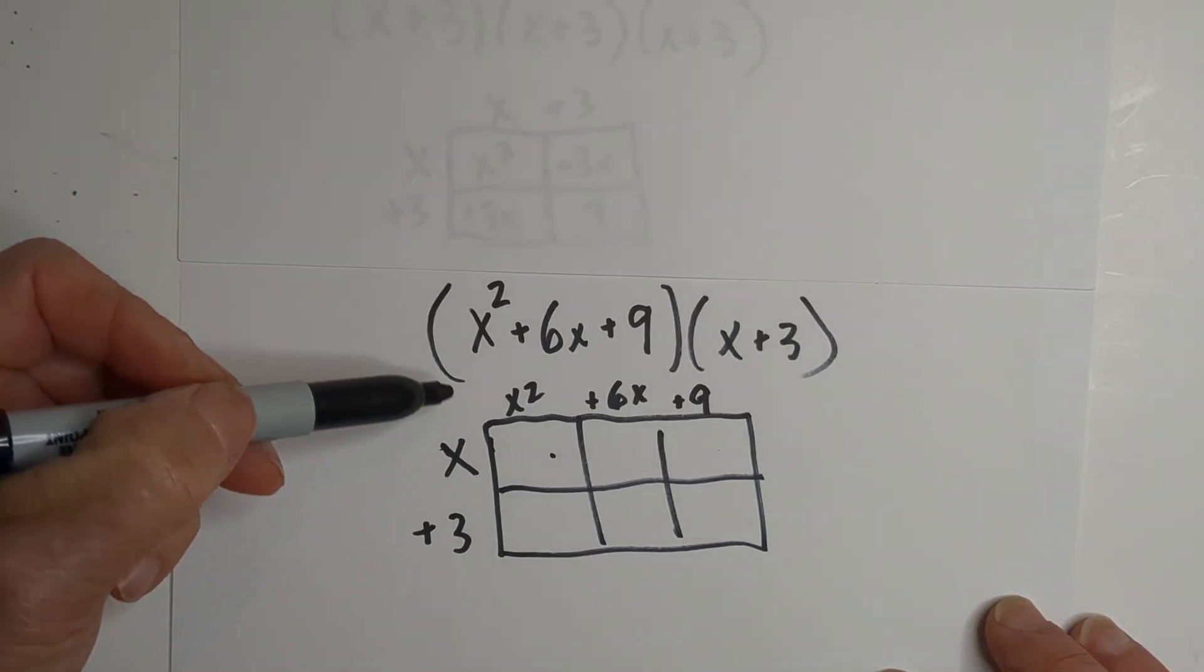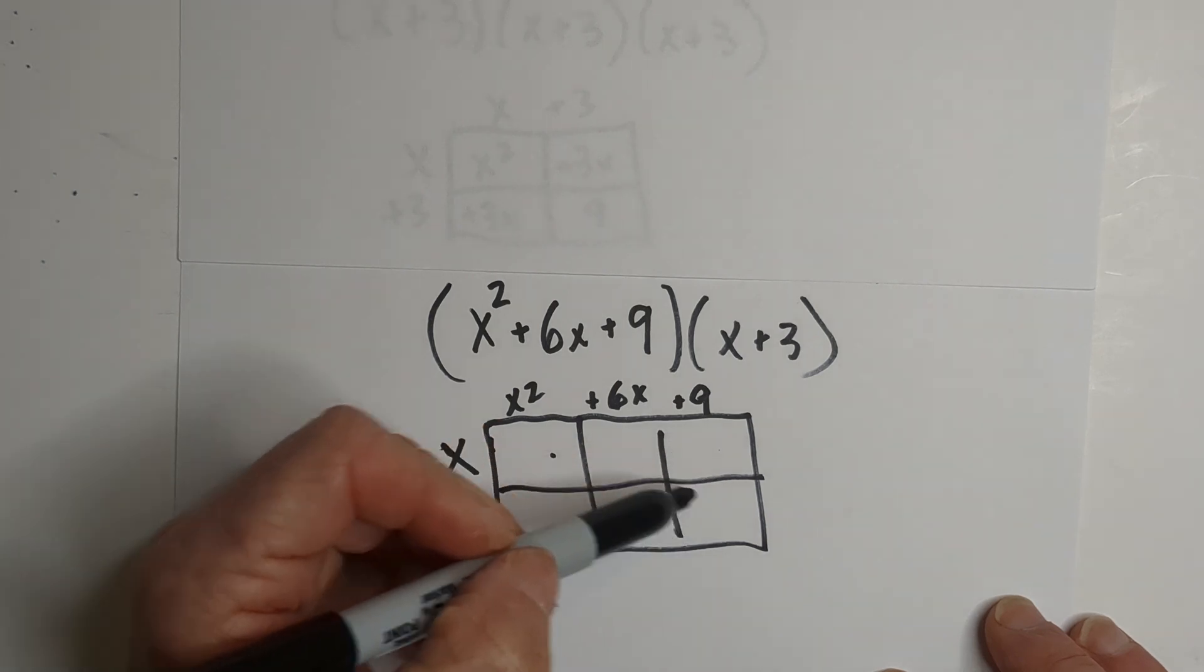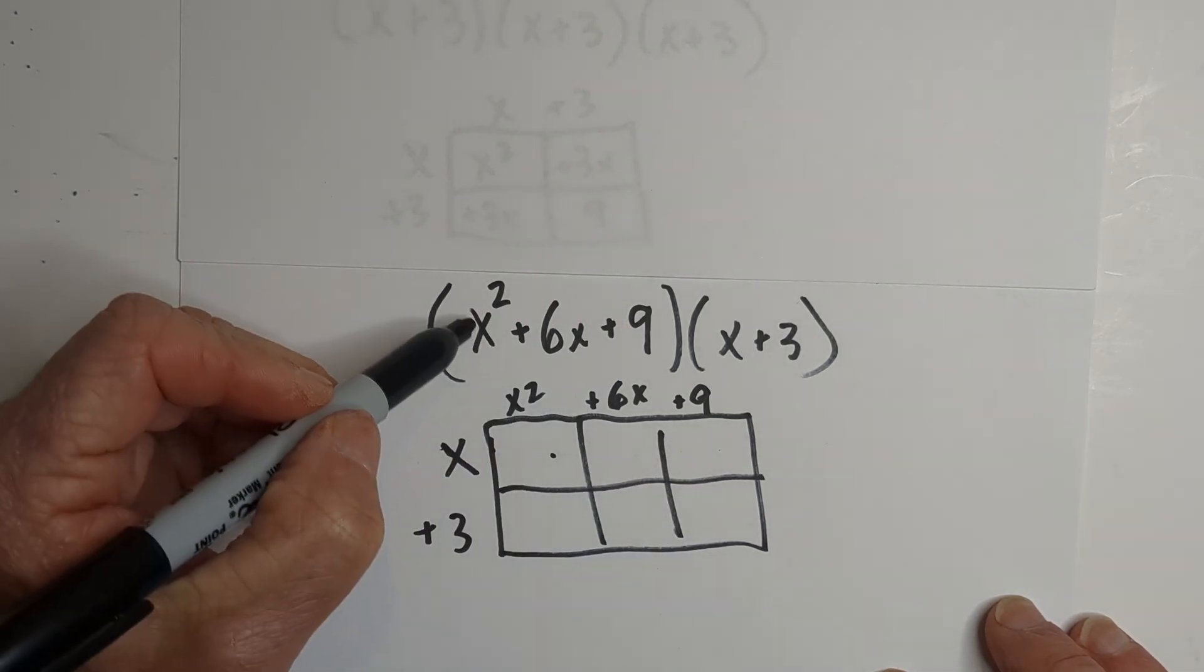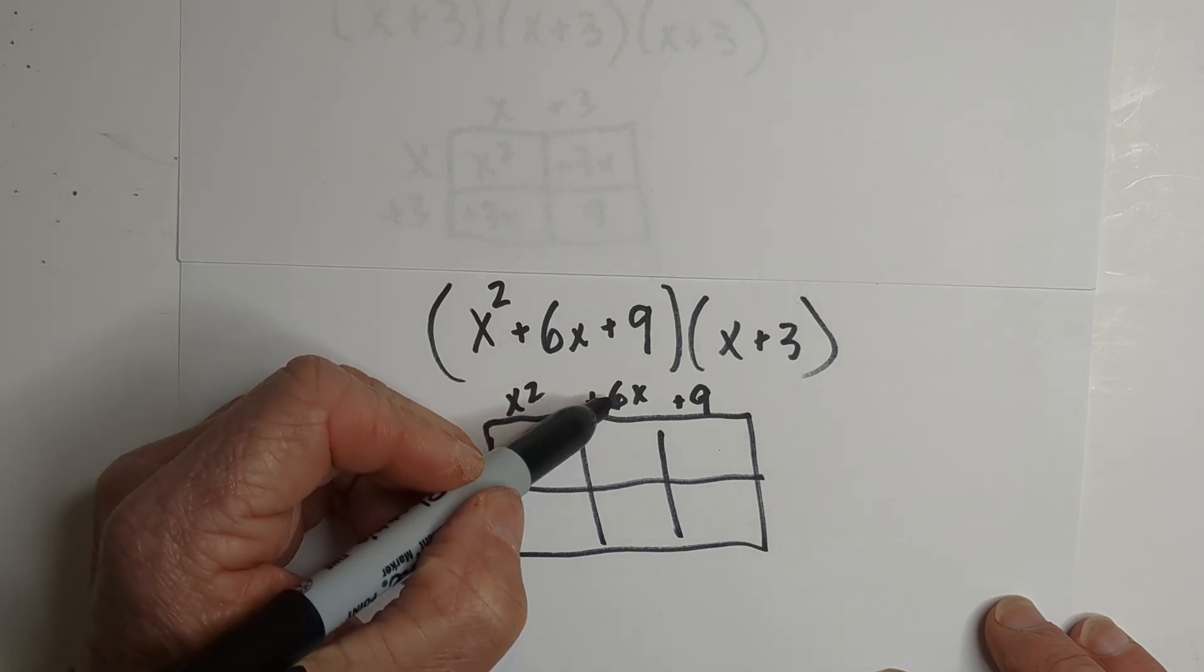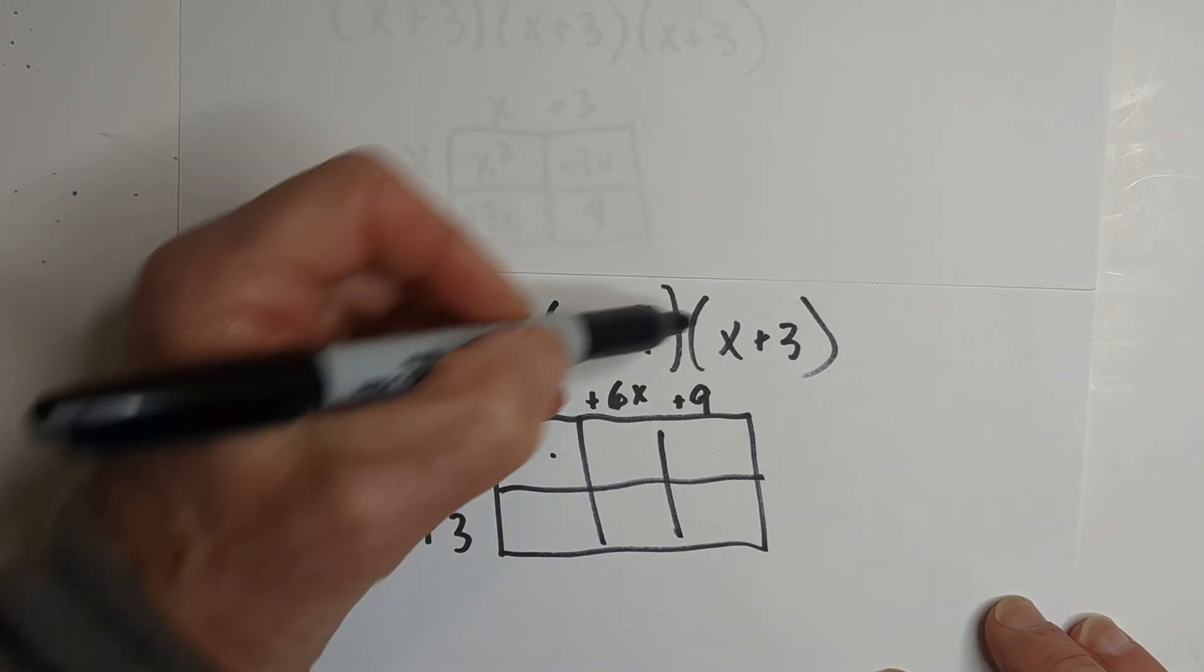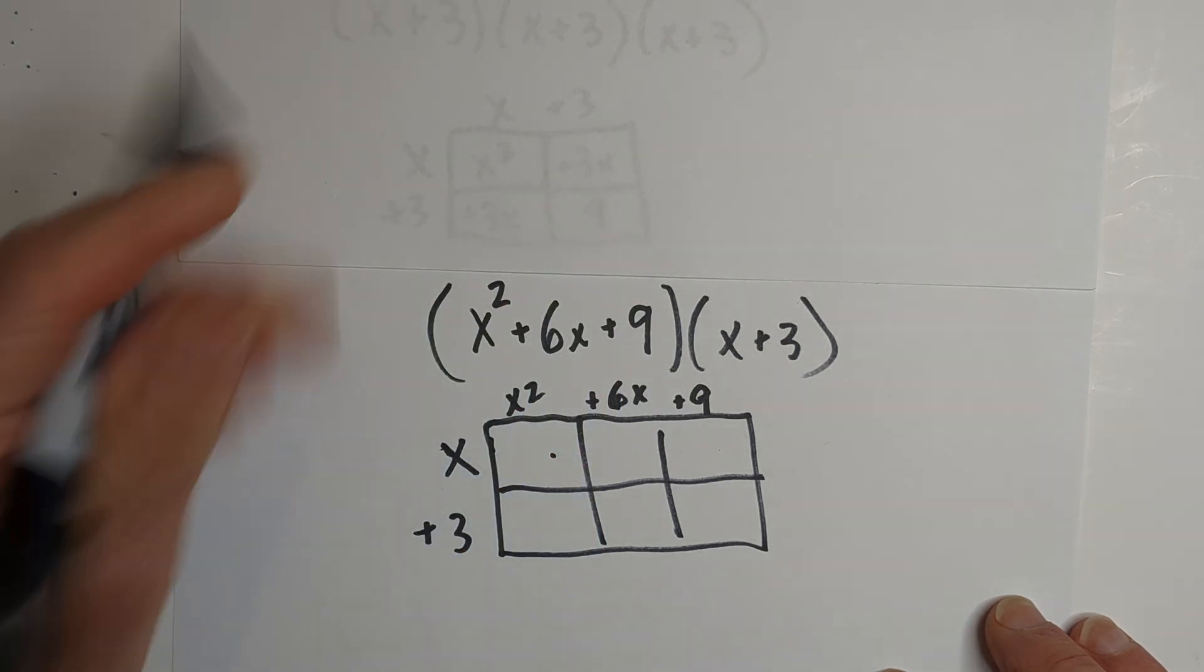Okay, so let's recap what I did. I wrote a box - now we have three because we have three parts here - and we move the x squared here, the 6x there, and the 9 here. And then we wrote x and a positive 3.